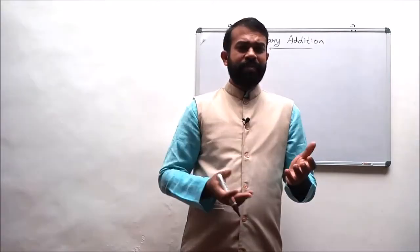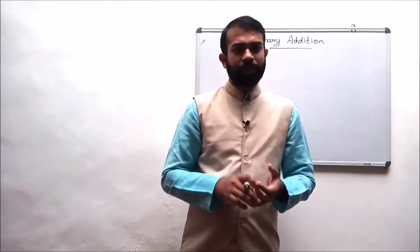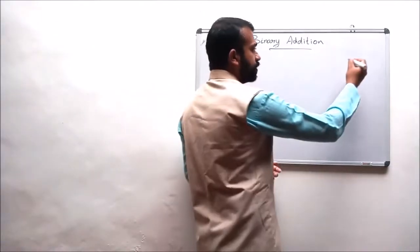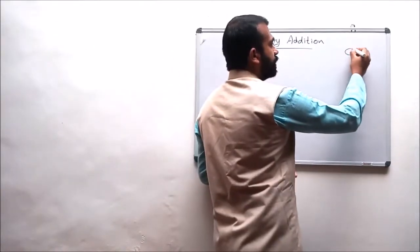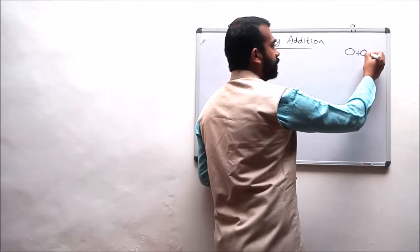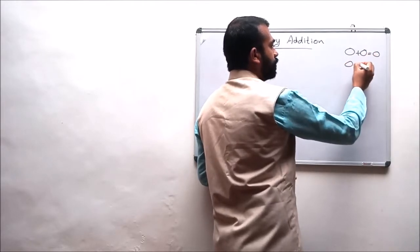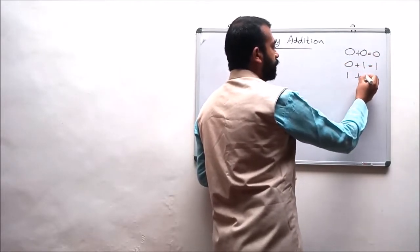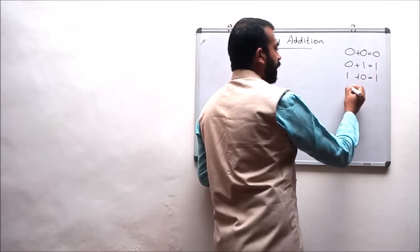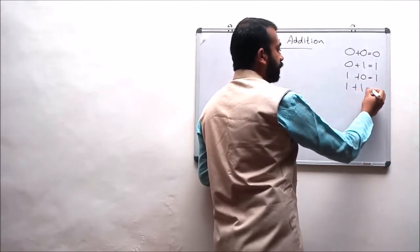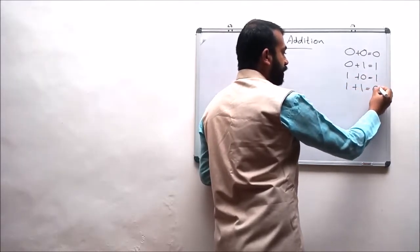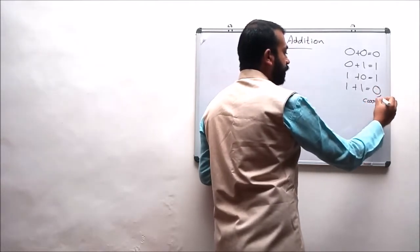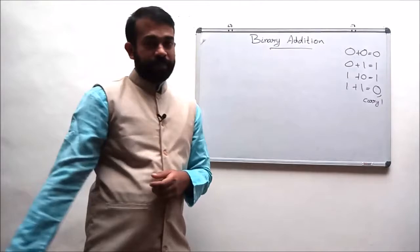In the previous lecture we discussed the different binary arithmetic rules. According to the binary arithmetic addition rule, the rule states that 0 plus 0 will result in 0, 0 plus 1 will result in 1, 1 plus 0 will result in 1, and 1 plus 1 will result in 0 with a carry of 1.